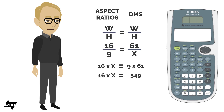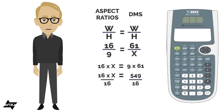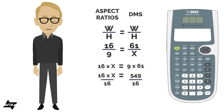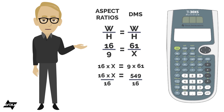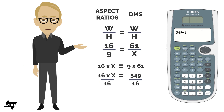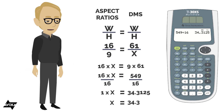So we have 16 times x equals 549, and we need to get x by itself. We divide both sides by 16 — since whatever we do to one side of the equation we must do to the other. That gives us 549 divided by 16, which equals 34.3125. So a 16:9 display that is 61 inches wide will be about 34.3 inches tall.